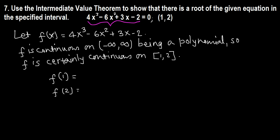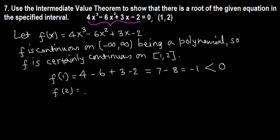f(1) means just plug in 1 for x: 4 times 1³ is 4, minus 6 times 1² is 6, plus 3 times 1 is 3, minus 2. So 4 minus 6 plus 3 minus 2 equals negative 1, which is less than 0.